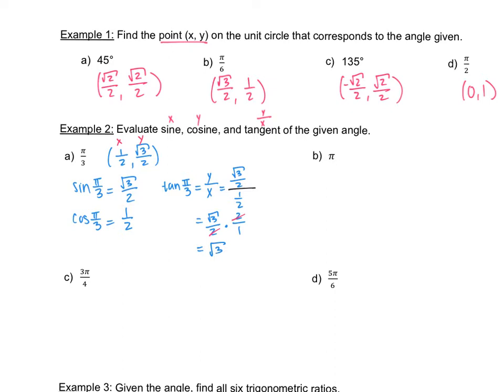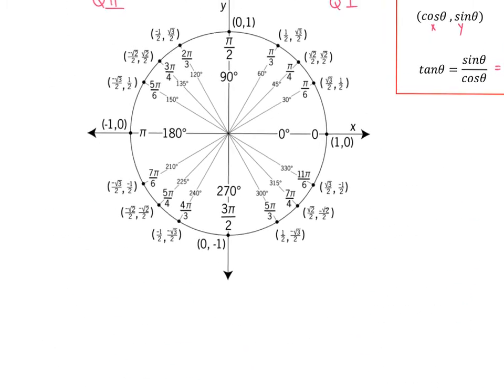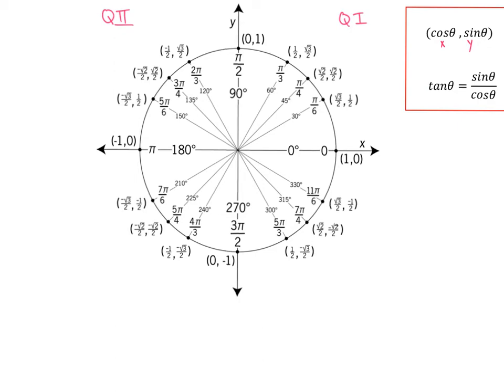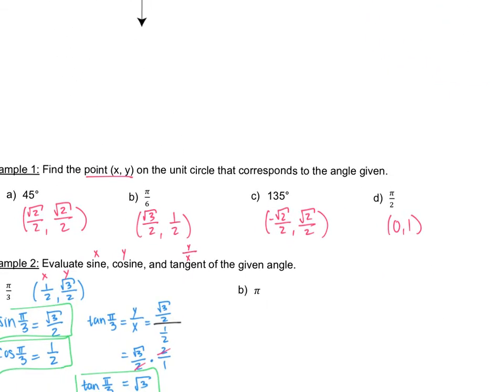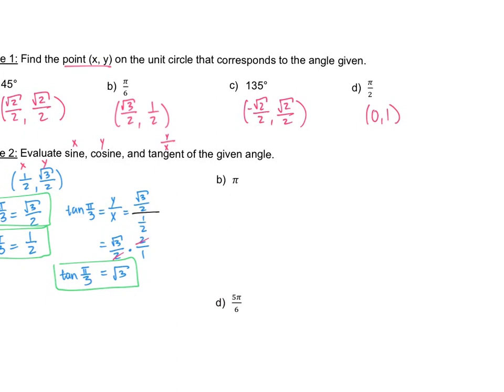So tangent of pi over 3 equals square root of 3. That gives us all three trig functions: cosine is 1 half, sine is square root of 3 over 2, and tangent is square root of 3. For the next one, we are given pi. Pi is at 180 degrees, and the coordinate is negative 1, 0.